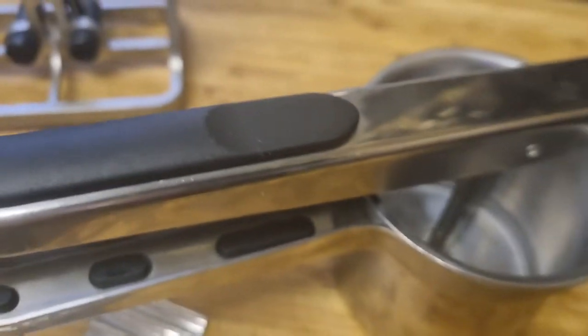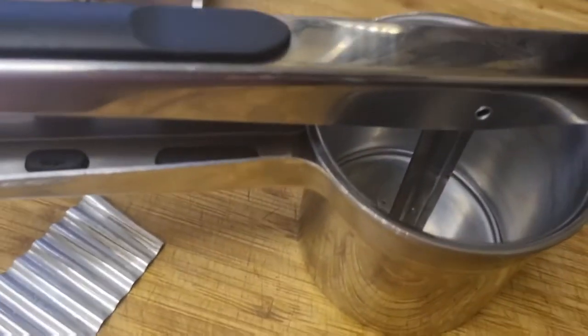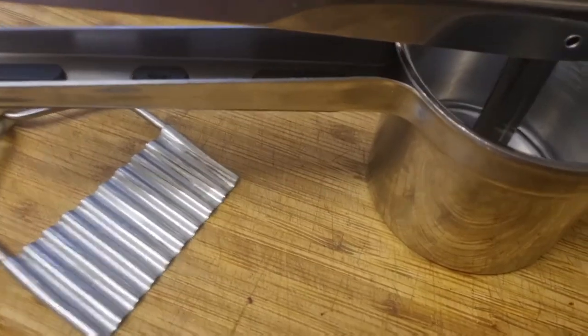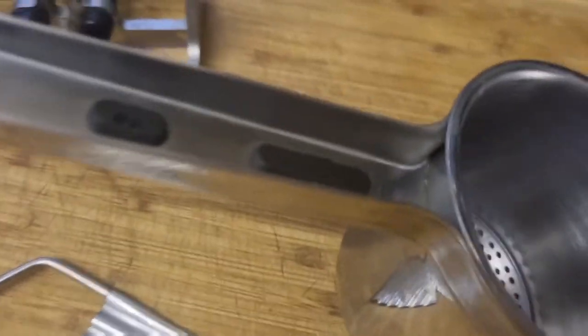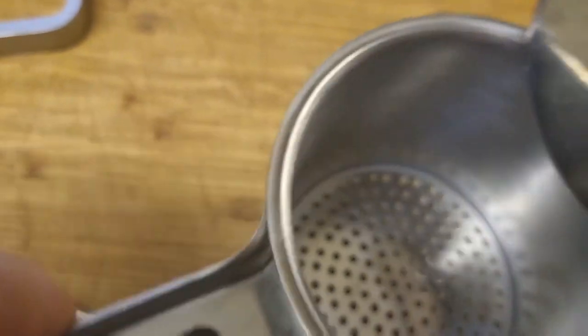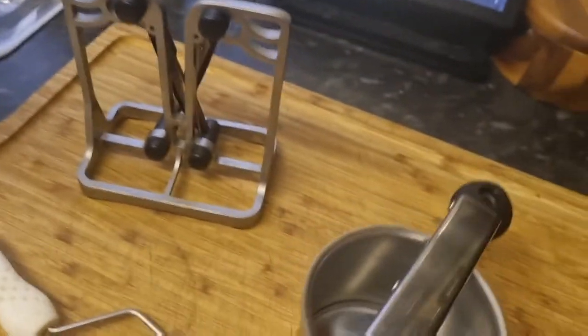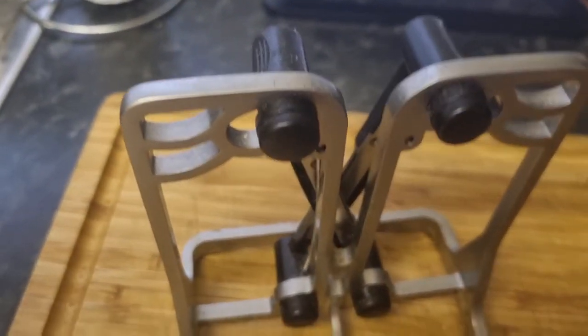Now this is a potato ricer, and fairly recent acquisition in the last couple of years. Never thought I needed one, I can make smooth mash. This takes it to the next level. You put your mashed potato, excuse me, you put your potato in there, you then pull this down and you push and out of here comes rice, comes potatoes that look just like rice. They are beautiful, no lumps, no bumps, absolutely wonderful.